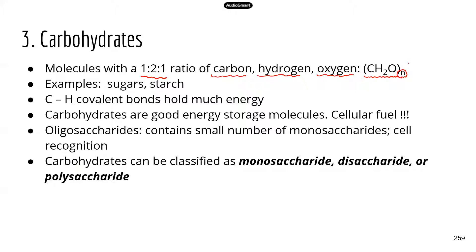N could be any number. For example, most of the sugar molecules that we know, like glucose and fructose, N equals 6. So if you put in the 6, their chemical formula is C₆H₁₂O₆. That's the chemical formula for glucose, and for some of the other common 6-carbon sugars like fructose and galactose — they all have this chemical formula.